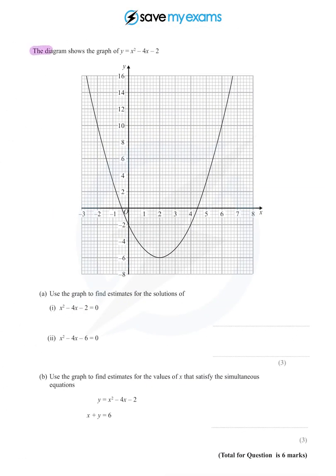So we're given the graph of a quadratic function x² - 4x - 2, classic quadratic shape. There it is, the happy parabola, smiley parabola, and we are asked to find estimates of solutions. So a bit of work to do here, let's have a go.